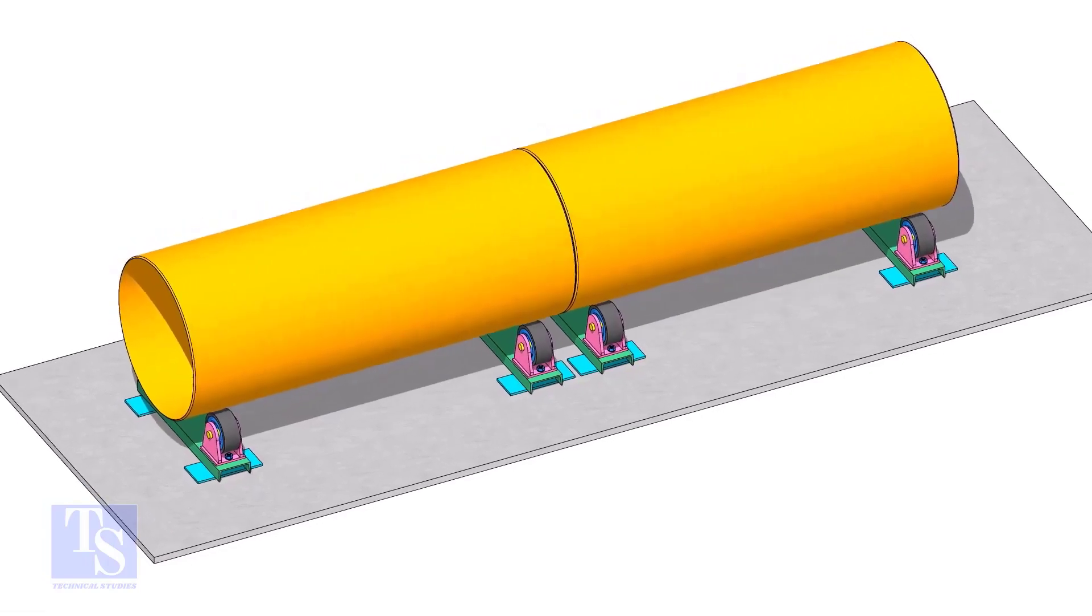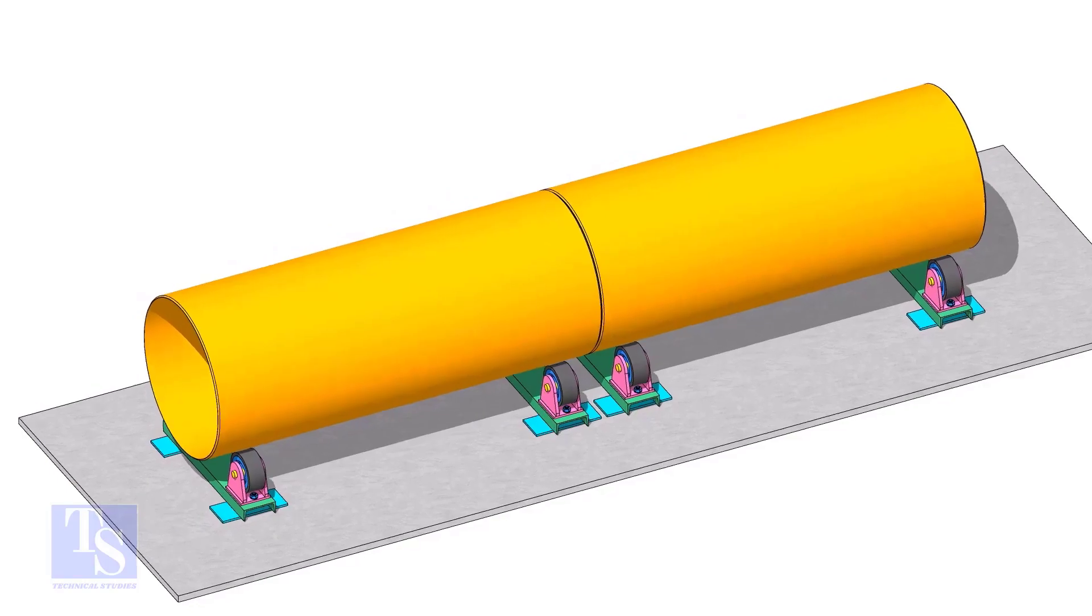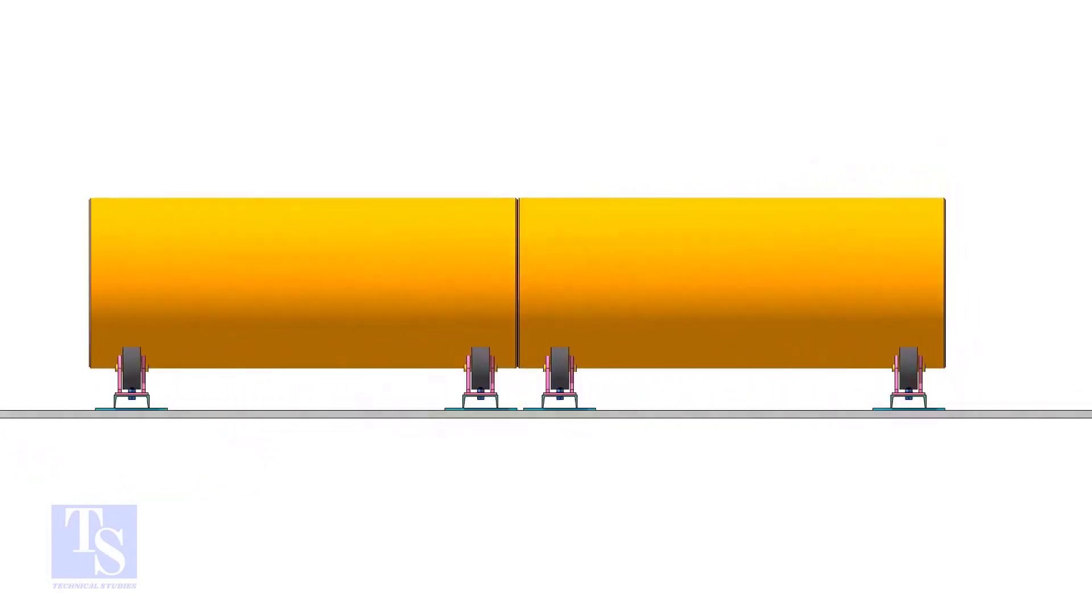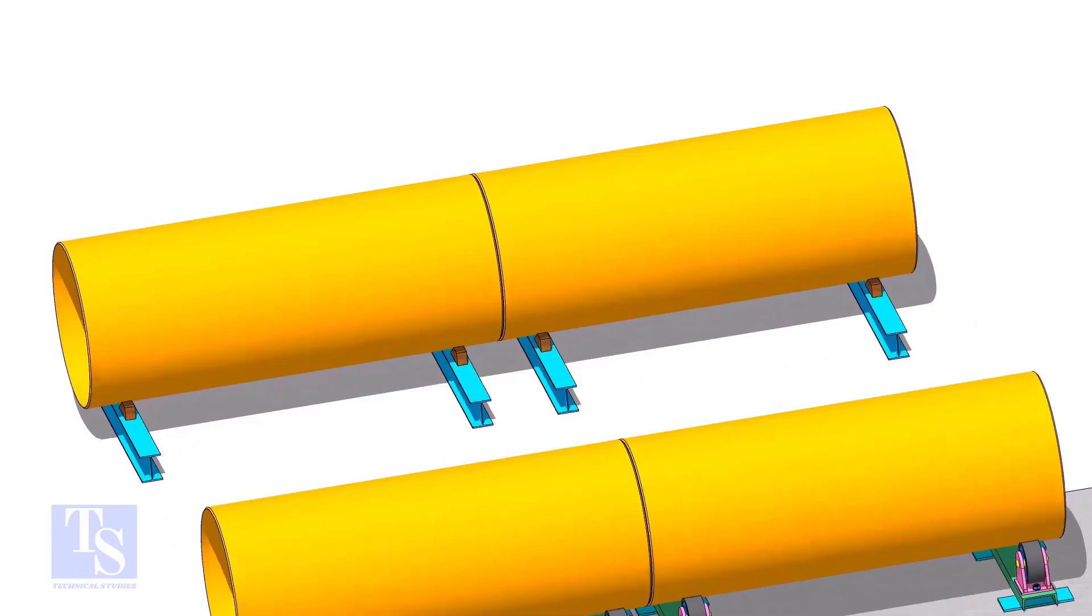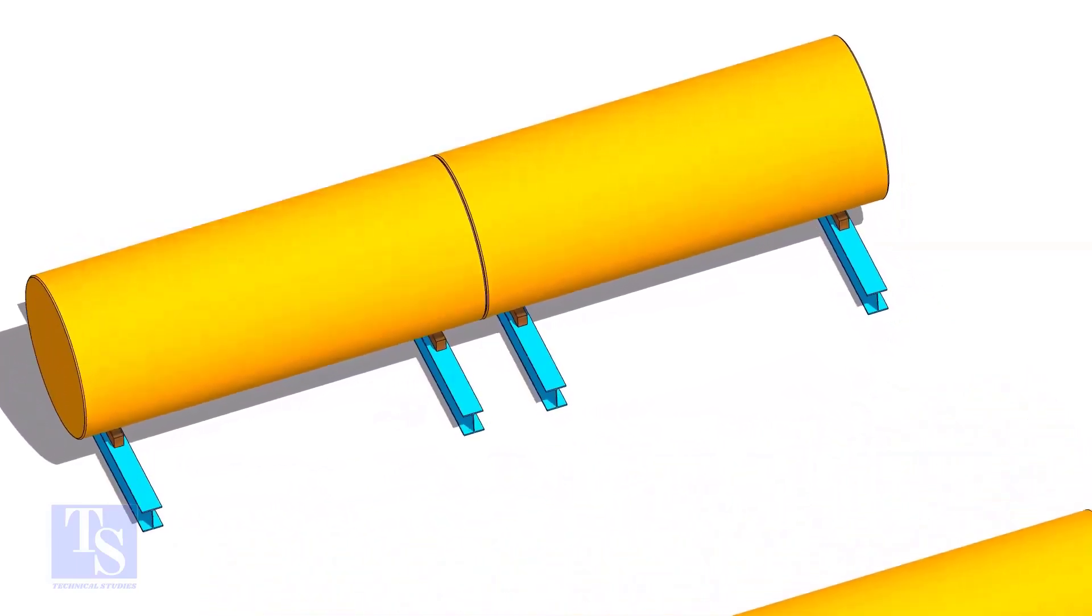You can fit up large pipes either on rollers or on beams. The method is almost the same. Remember to level the rollers or the beams before you put the pipes on it.